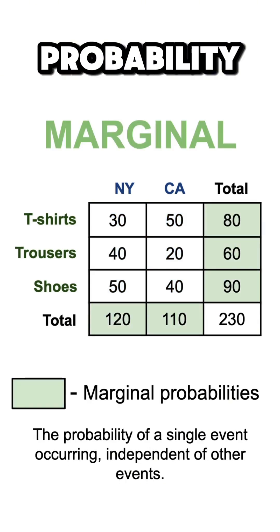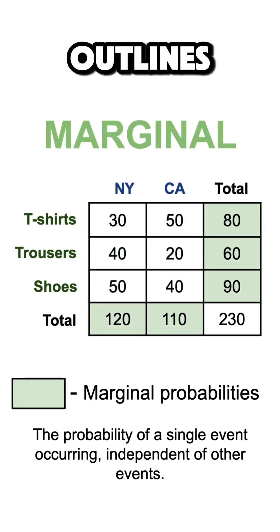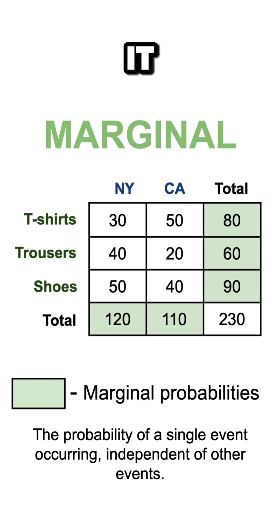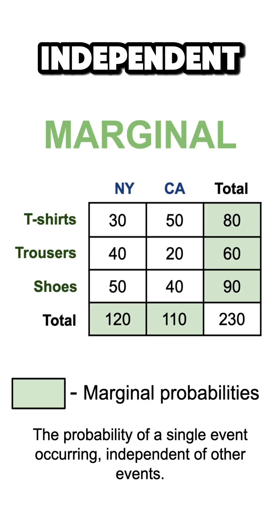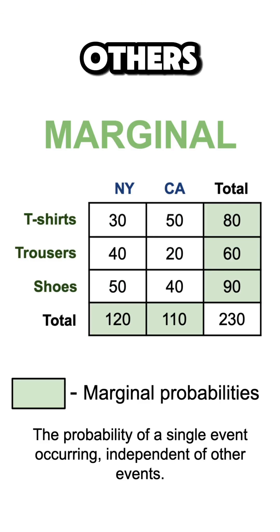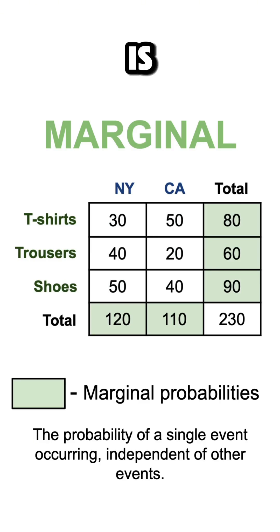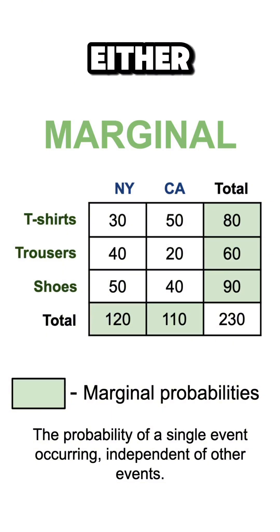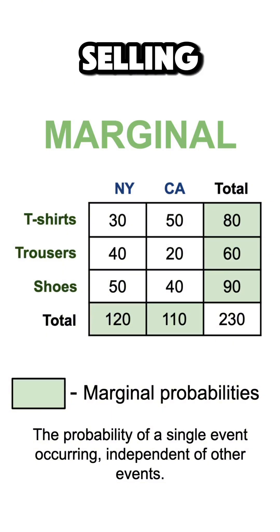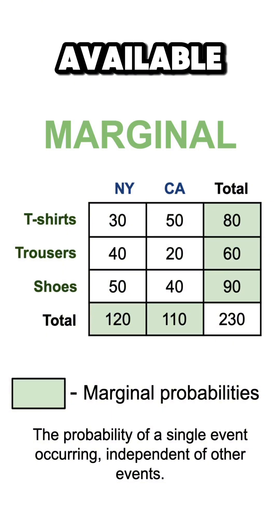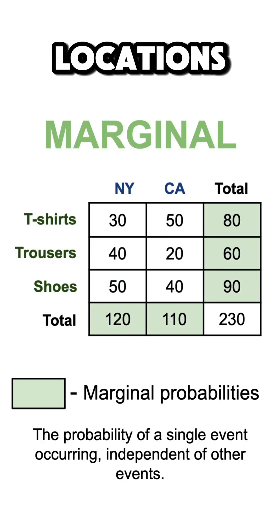Then, the marginal probability outlines how probable it is for an event to occur, independent of all others. In our example, it is represented by the probability of either selling a piece of clothing or selling in one of the available locations.